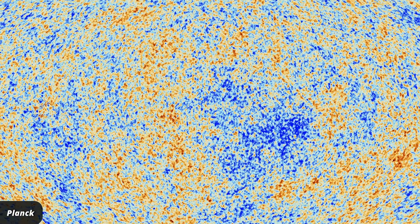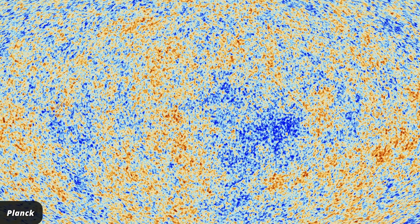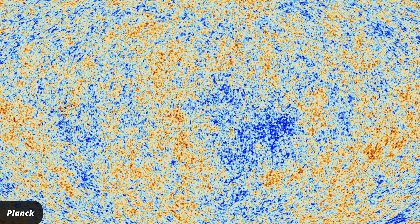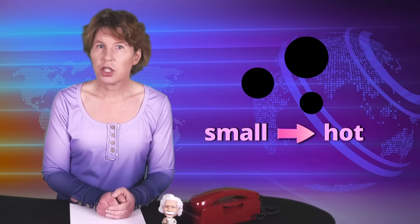For black holes of stellar mass or greater, the temperature is far below even that of the cosmic microwave background. We can't measure it. But very small black holes are hot, and their radiation should be measurable.